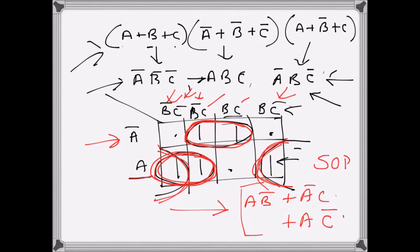So the minimized sum of product expression is a b bar + a bar c + a c bar. The product of sum expression was given, and we used a Karnaugh map to find this minimized sum of product expression.